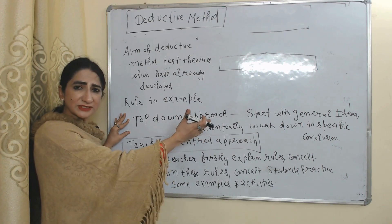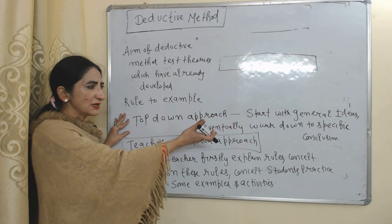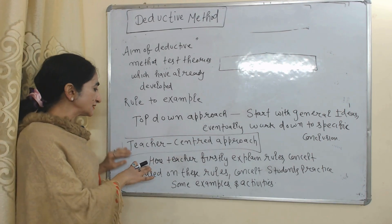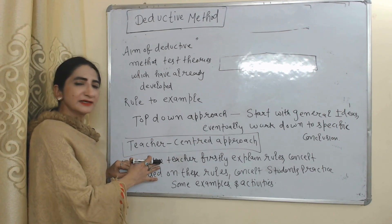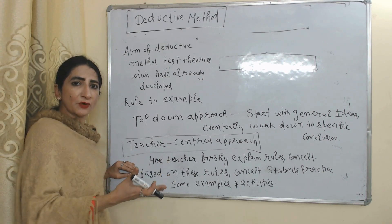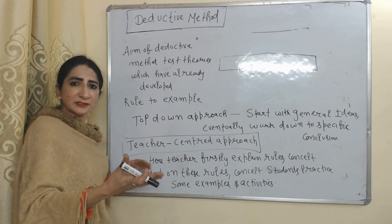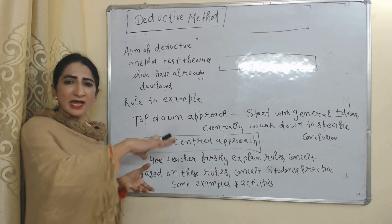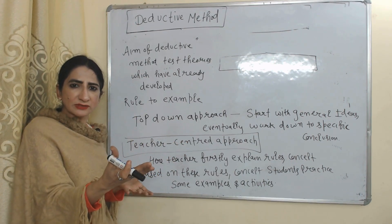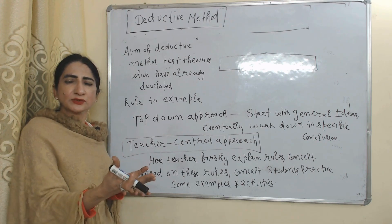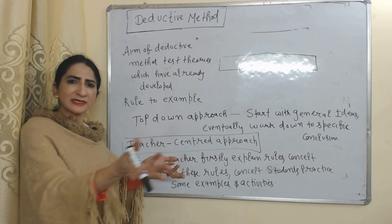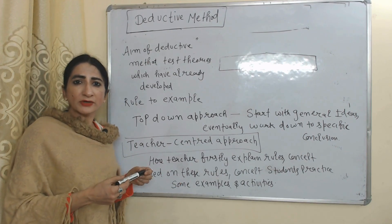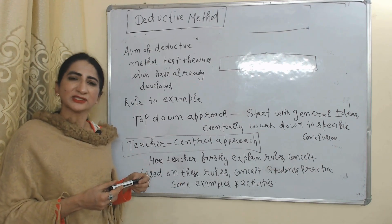The top-down approach means we start with general ideas and eventually work down to specific conclusions. This is a teacher-centered approach — the teacher first explains some rules and concepts to students, and based on these rules and concepts, students practice some examples and activities. So this is all about inductive and deductive methods.